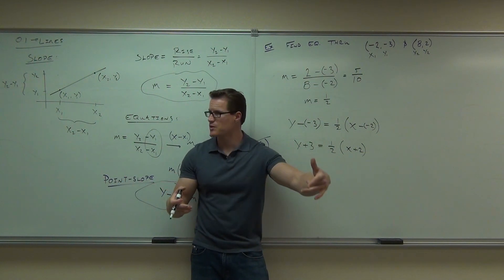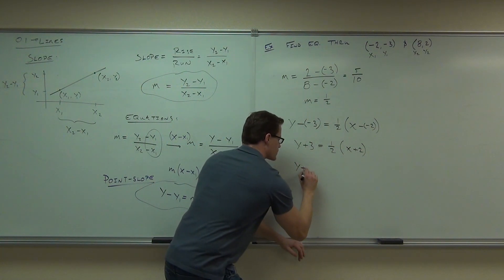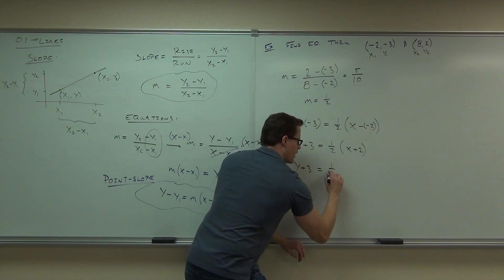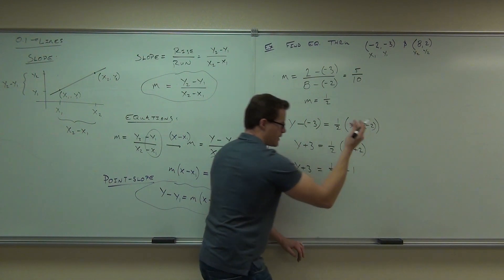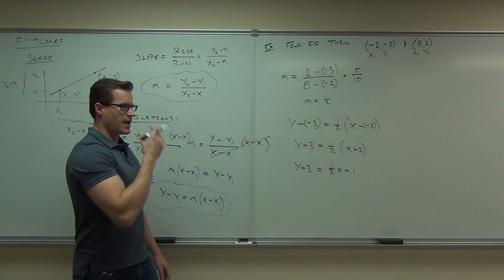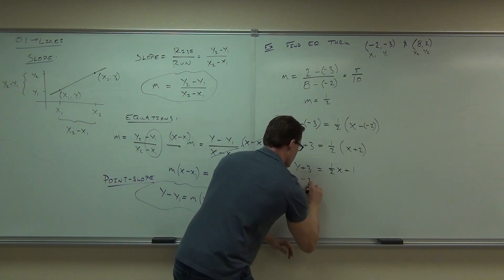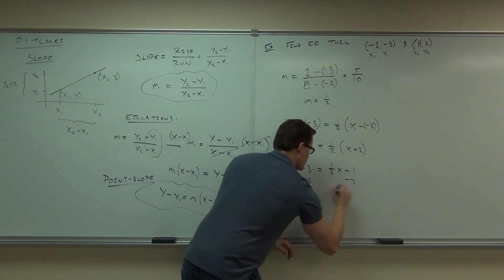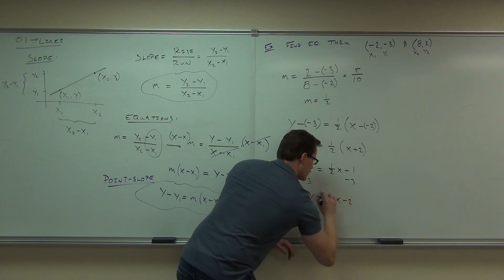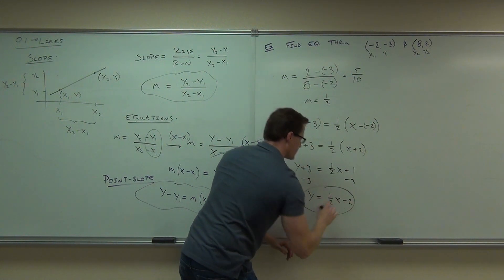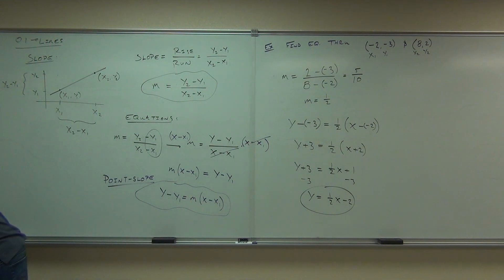We want to get rid of those parentheses — we'll distribute that. If we distribute the right side, I'm still going to have Y plus three, but I'm going to get one half X plus what? One. One half times two gives us one. And lastly, the last step gives us five, so Y equals one half X.